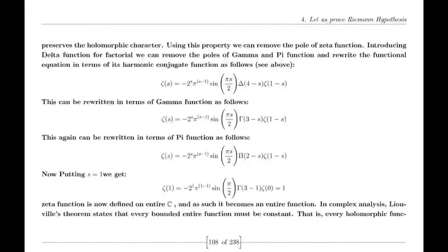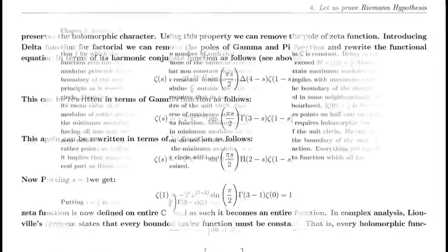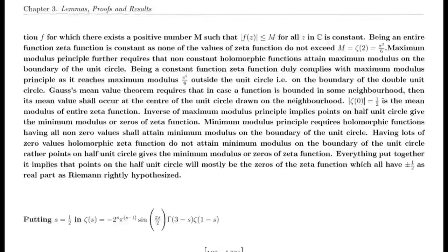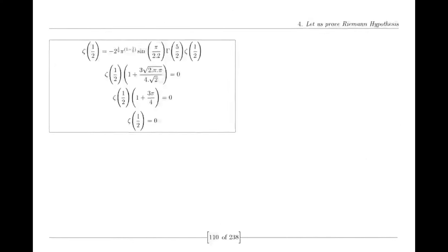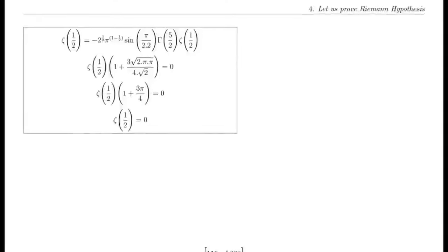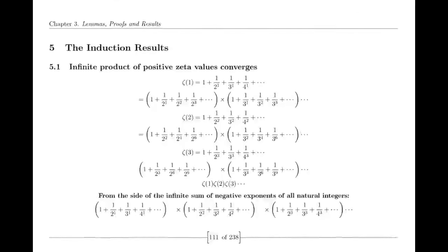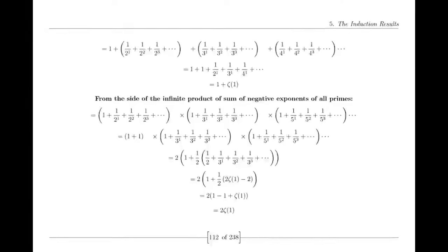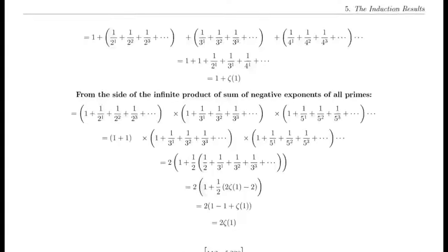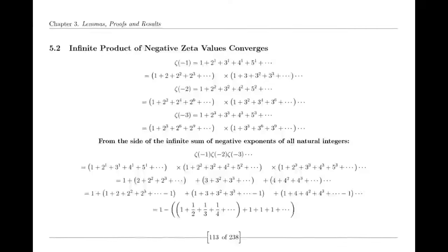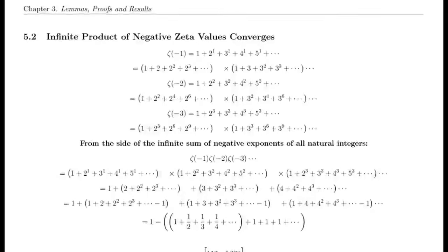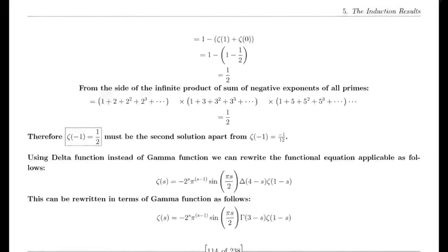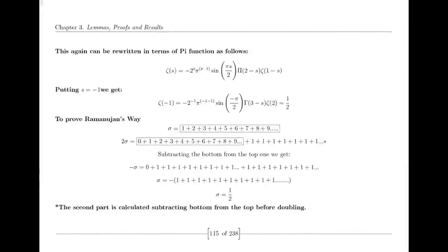Suraj, while hurt by the criticism, remained undeterred. He understood the importance of constructive feedback and saw it as an opportunity to further refine his ideas. He reached out to both supporters and detractors, inviting them into discussions aimed at clarifying the connections and addressing the critiques head-on. In a pivotal online symposium, Suraj presented his findings, tackling the criticisms directly. He laid out his reasoning for the unified zeta function, elaborating on its construction and the significance of removing simple poles. He acknowledged the concerns regarding the gamma function and expressed a willingness to explore its implications further. A mix of skepticism and curiosity filled the air.